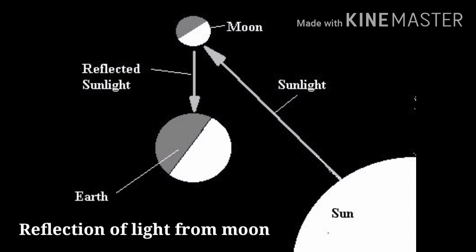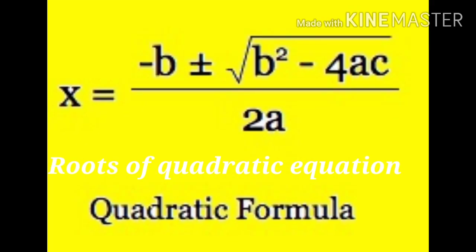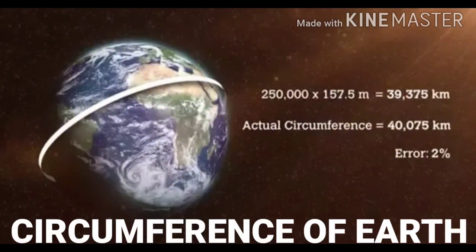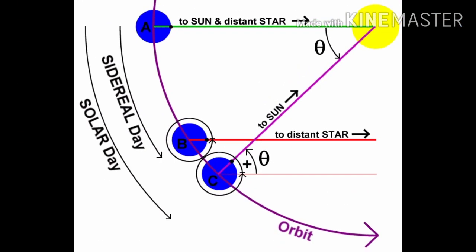Aryabhatta also calculated the value of pi correct to four decimal places, the circumference of the earth to 99.8 percent accuracy, and the calculations of the length of the sidereal year.